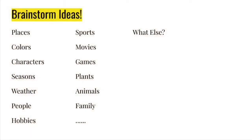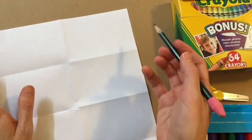So from here you're ready to start making your cards. Let's brainstorm ideas. Here's some of the ones that I came up with. Places, colors, characters, seasons, weather, people, hobbies, sports, movies, games, plants, animals, family members, and then what else? What other ideas do you have? Let's think about it, and then when you're ready you can start.